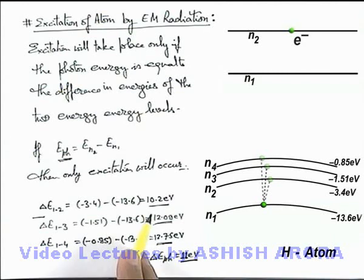So only those photons can excite an atom of which the energy values are equal to the exact difference between the Bohr energy level differences.